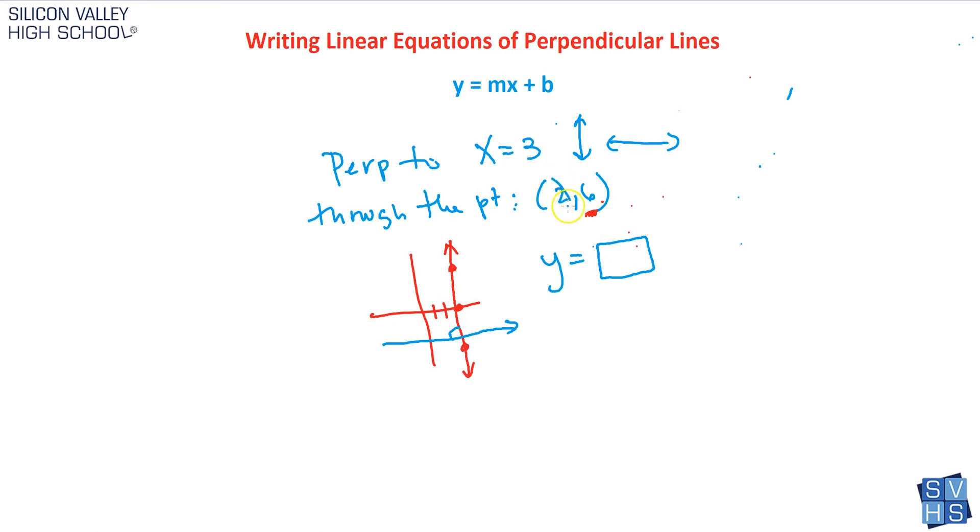You simply take your y value from your point and stick it in there, and you're totally done. Not this, that's the x value. y is six. The line y equals six is definitely perpendicular to the line x equals three. And it goes through our point, sure enough, because that's where we got our y value.